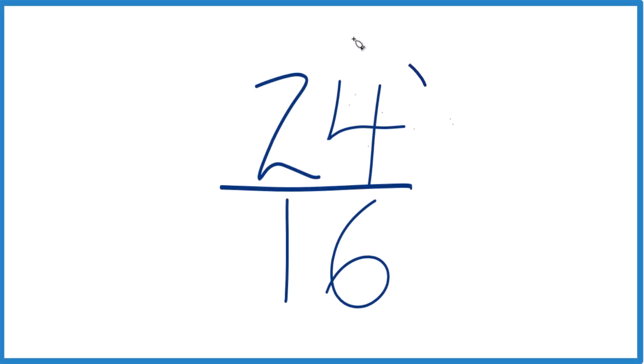So let's simplify the fraction 24 sixteenths and then write it as a mixed number. To simplify 24 sixteenths, we need to find a number that goes into both 24 and 16, a whole number that goes into both 24 and 16 evenly. So we need the factors of 24 and 16.